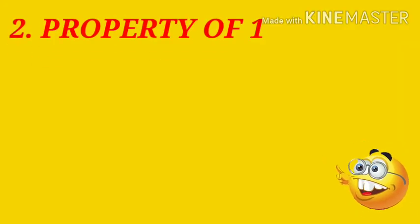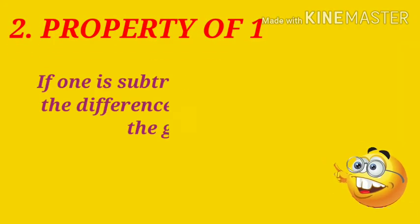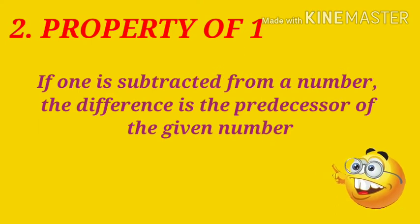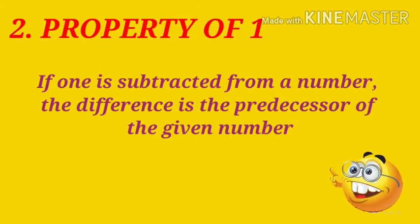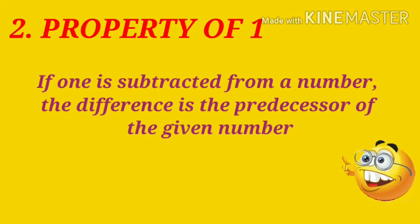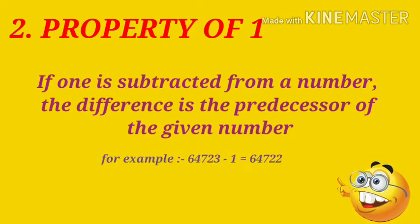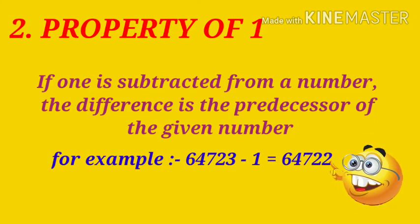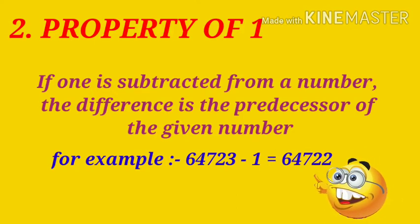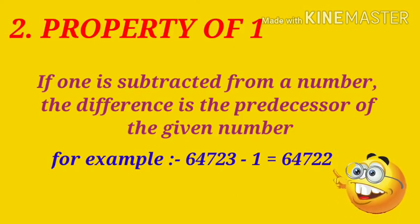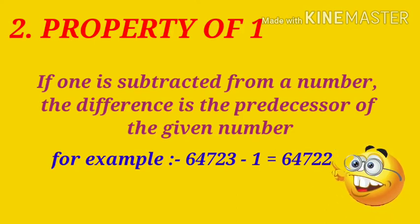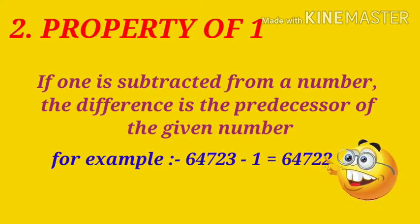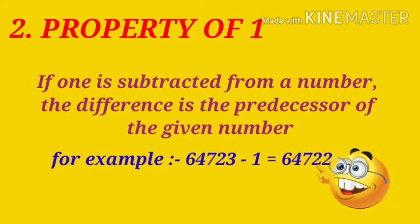Property of one: if 1 is subtracted from a number, the difference is the predecessor of the given number. For example, 64,723 minus 1 equals 64,722.